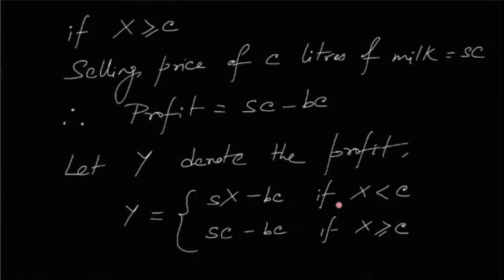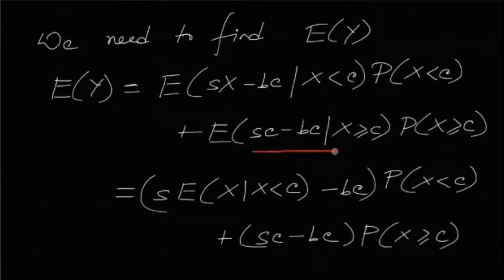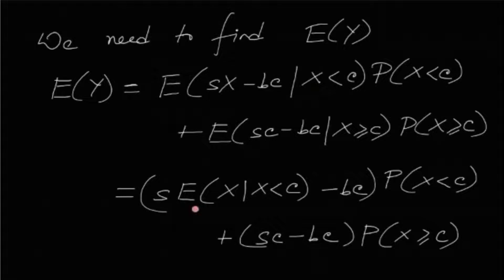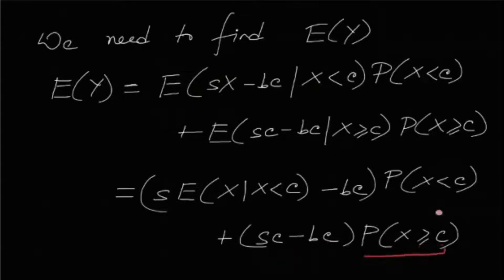This is a conditional expectation split case-wise, since the distribution of Y depends on X. So expectation of Y equals expectation of (SX minus BC) given X less than C, times probability(X less than C), plus expectation of (SC minus BC) given X greater than or equal to C, times probability(X greater than or equal to C). This boils down to S times E[X | X < C] minus BC, multiplied by P(X < C), plus SC minus BC times P(X ≥ C).